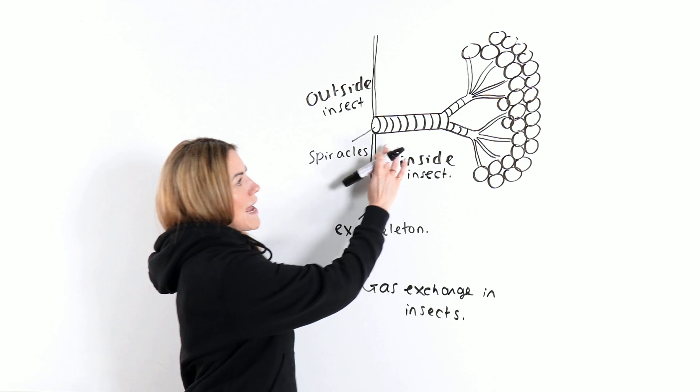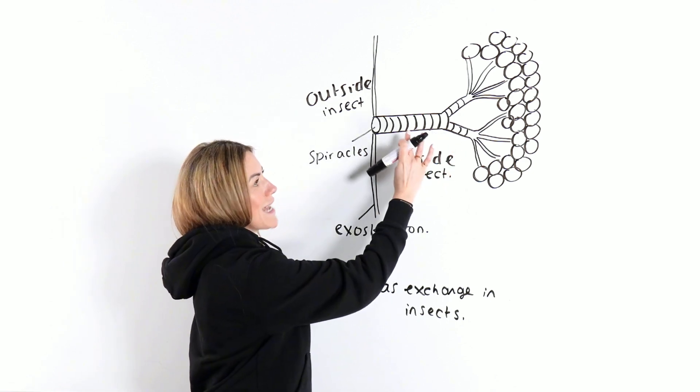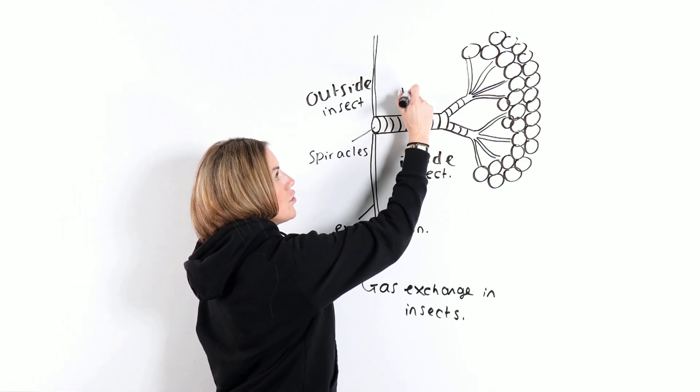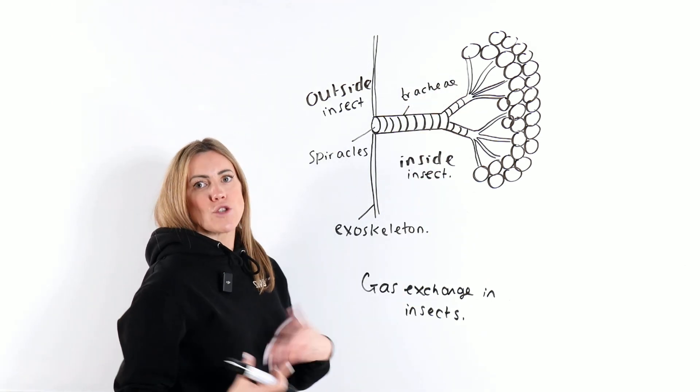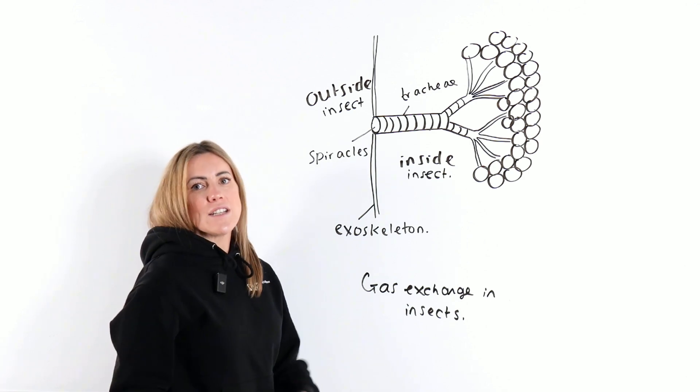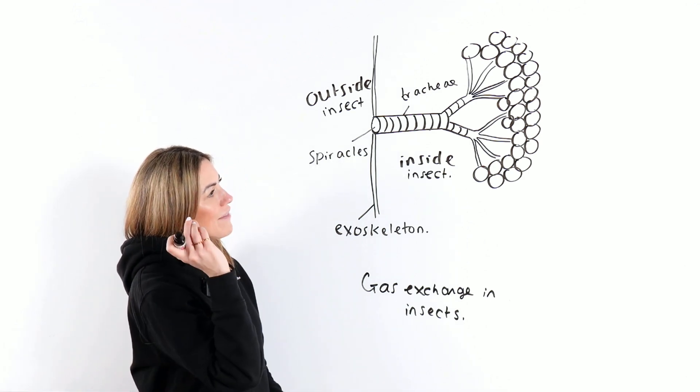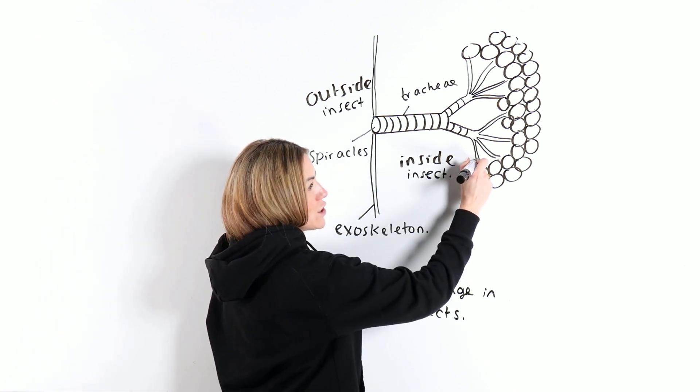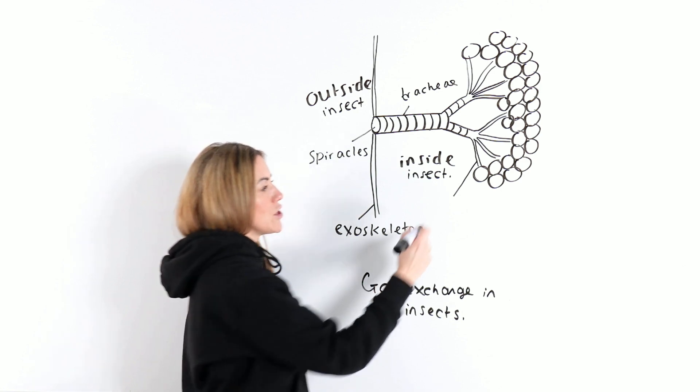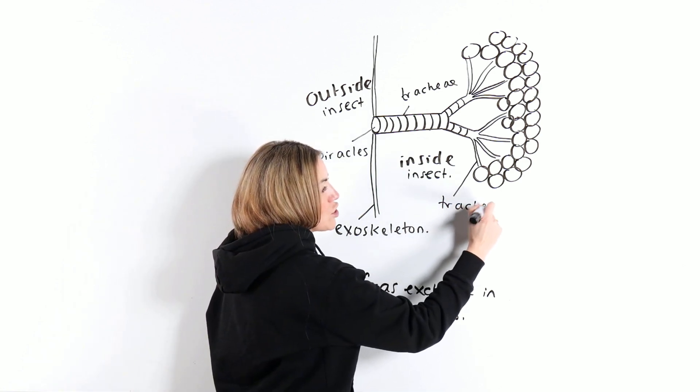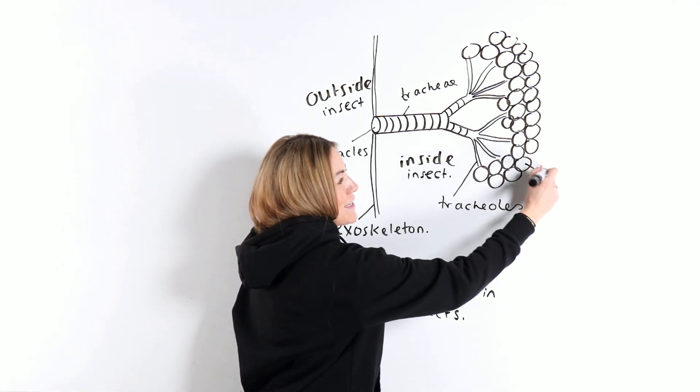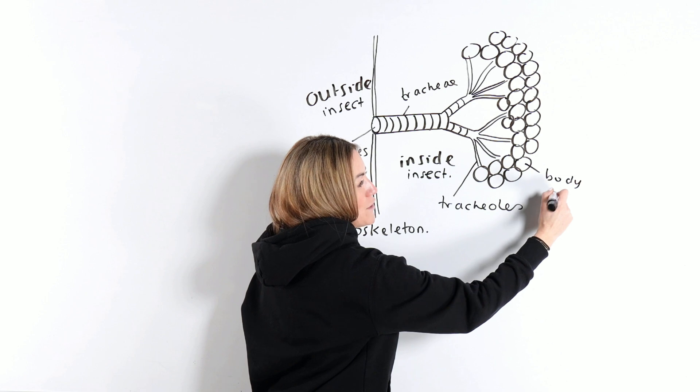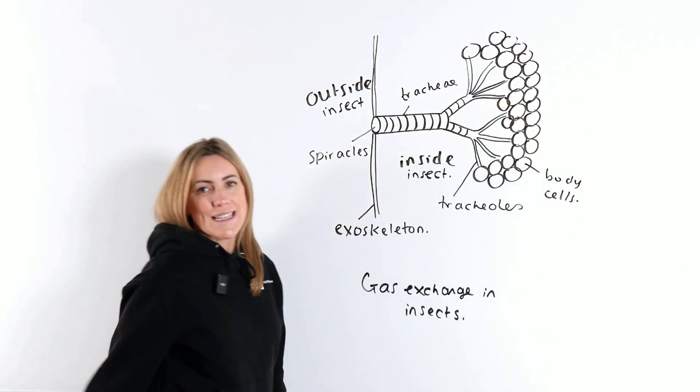Those spiracles connect to tubes and the bigger tubes are known as trachea, or one would be a trachea, but there are many, so they're tracheae, it's just the plural. Then the tracheae branch into finer or narrower tubes, which are the tracheoles. And these circles here are meant to be body cells, by the way, they're the body cells of the insect.